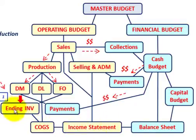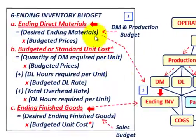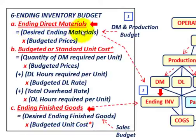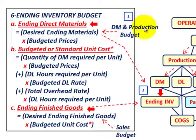For the ending inventory budget, the first thing we determine is the ending direct materials, which equals our desired ending materials times the budgeted prices for each material. The desired ending inventory materials come out of your direct materials and production budgets.